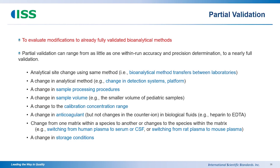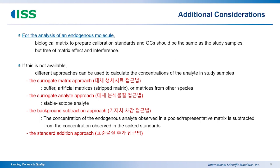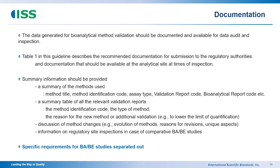For partial validation: if there is an analysis method change after full validation was done, partial validation can take place. Partial validation occurs when there is a modification to the test method after full validation. For cross-validation: because global analysis is run in many countries with many analytical methods, cross-validation may be needed. For additional considerations, there are four approaches for endogenous molecules to establish a calibration curve. Two weeks later, you will be able to see the details in Korean translation.